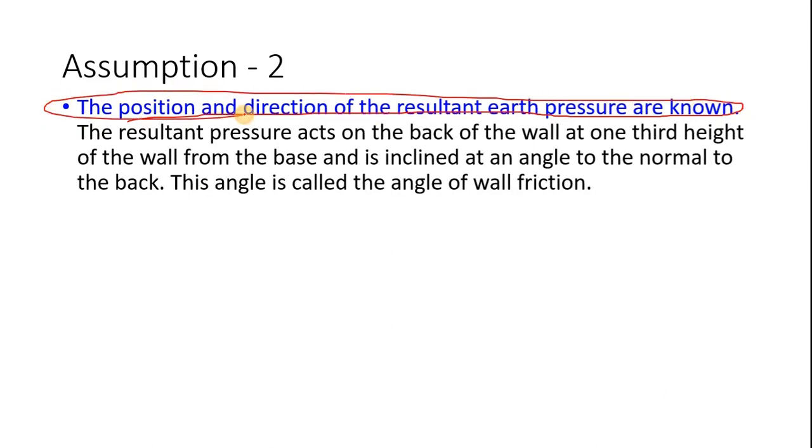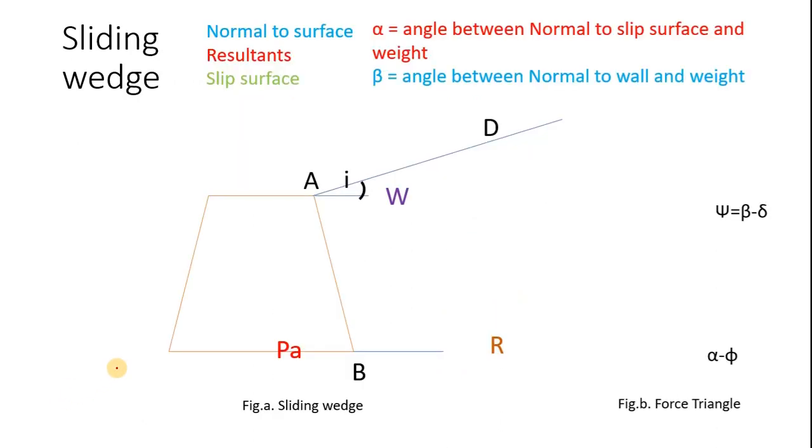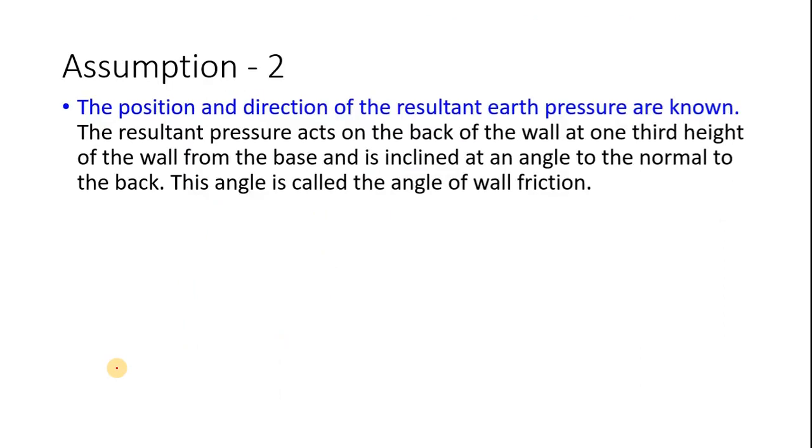The position and direction of the resultant earth pressure are known. PA acts at one-third height of the wall from the base and is inclined at an angle delta to the normal to the back. This is called the angle of wall friction.